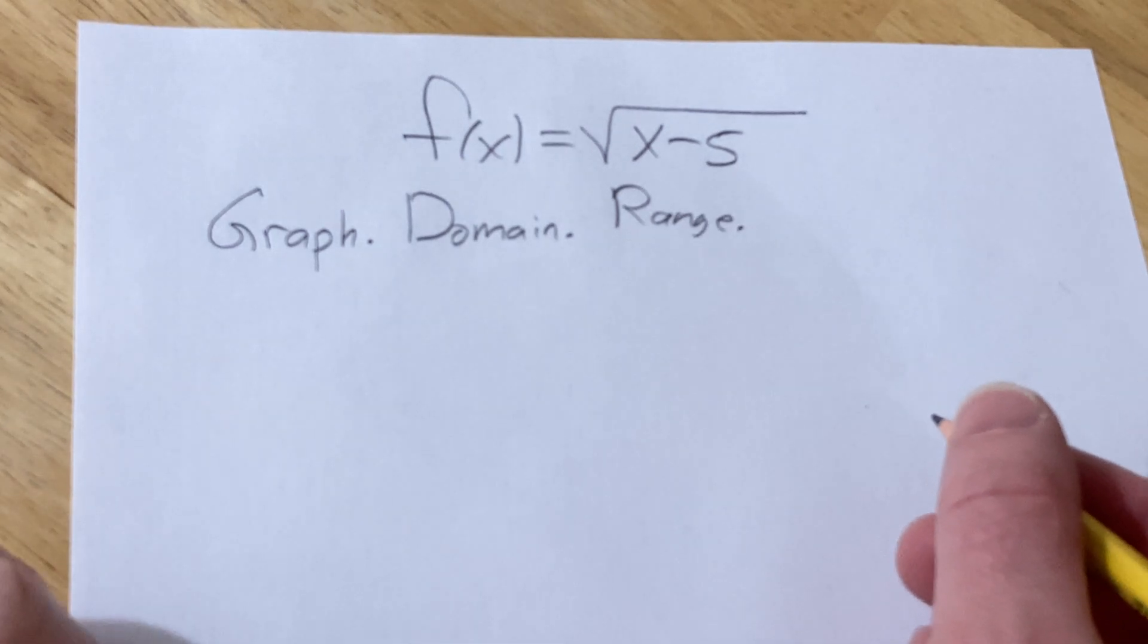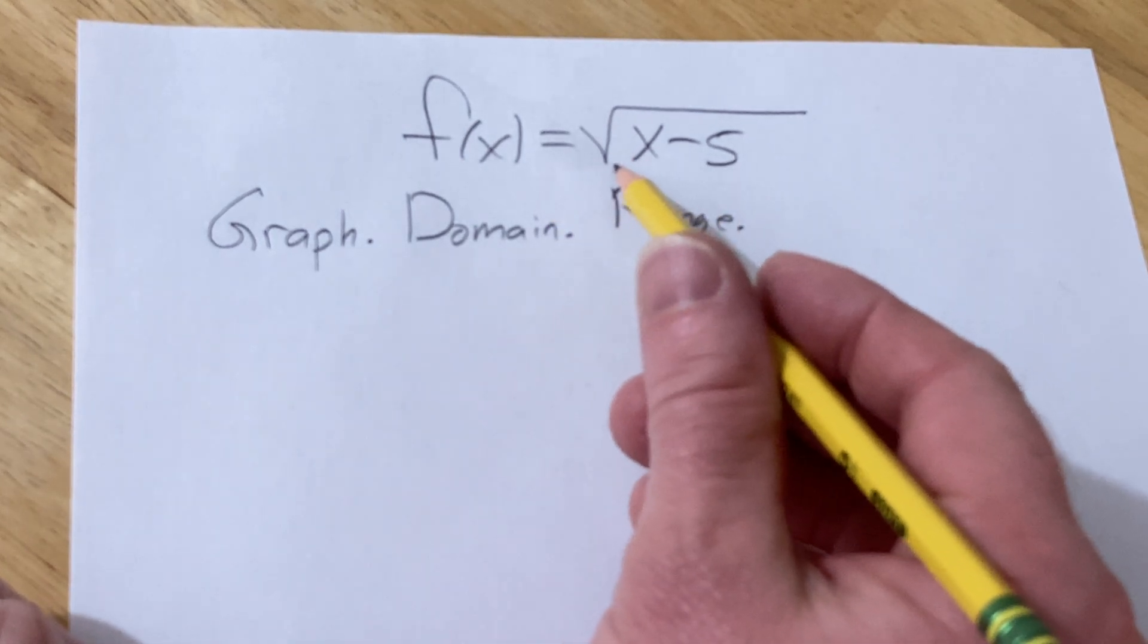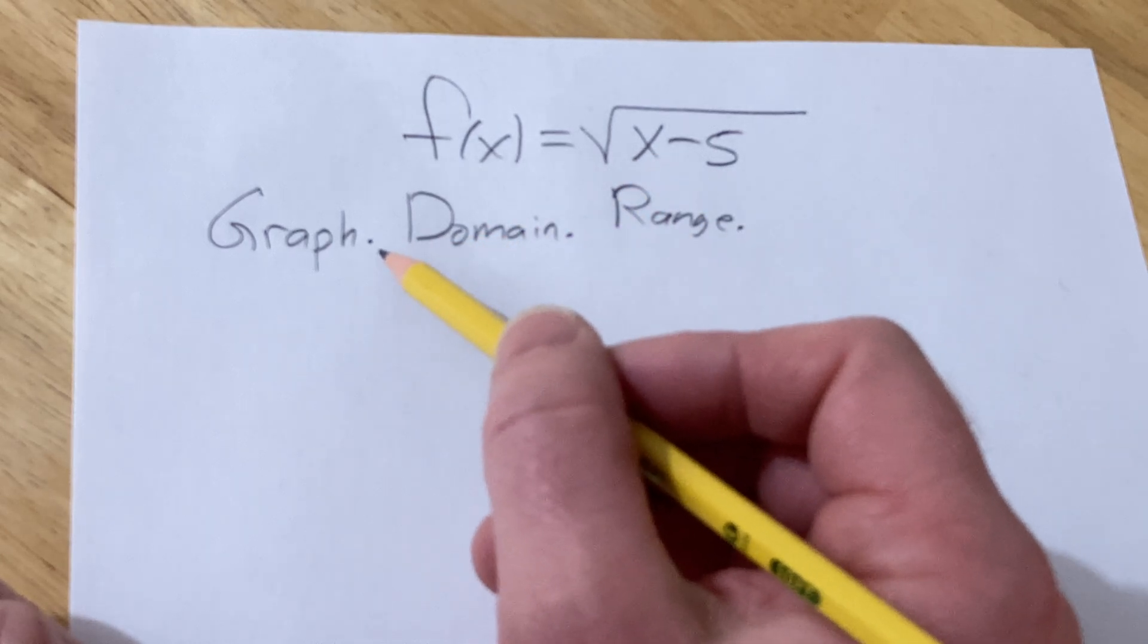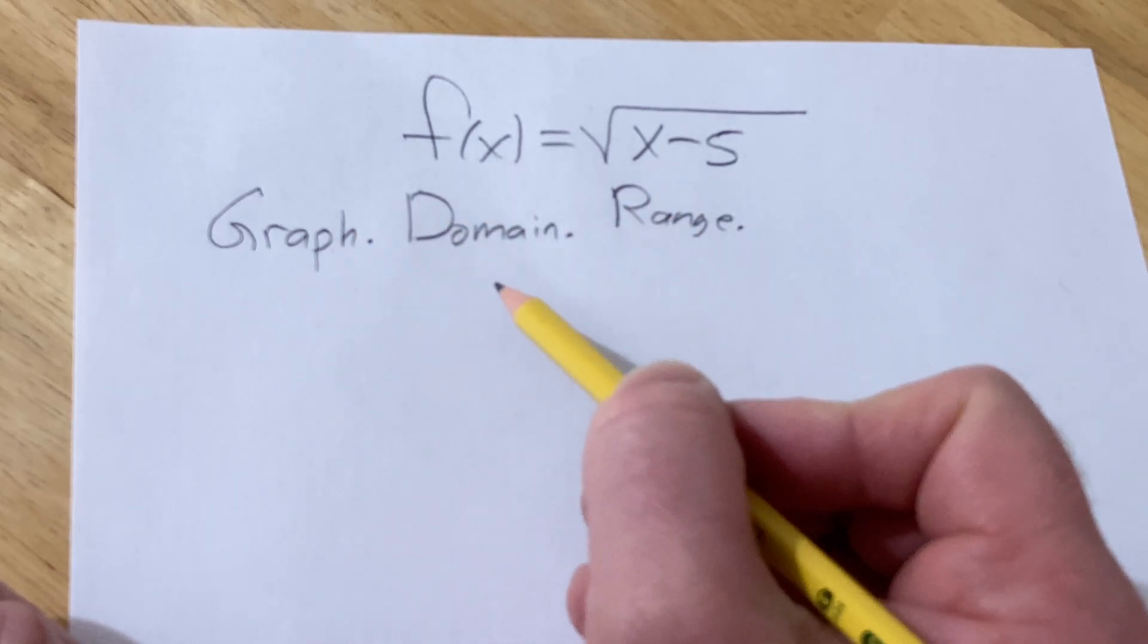Hi, in this video we're going to graph this function. We have f(x) equal to the square root of x minus 5. We have to graph, find the domain, and find the range.